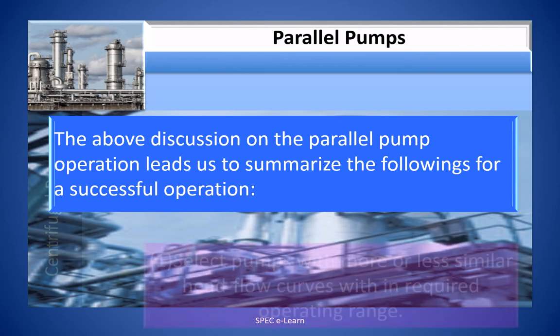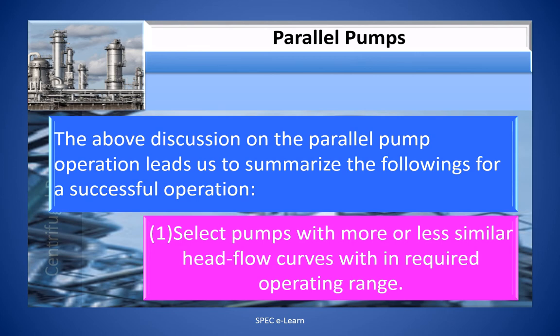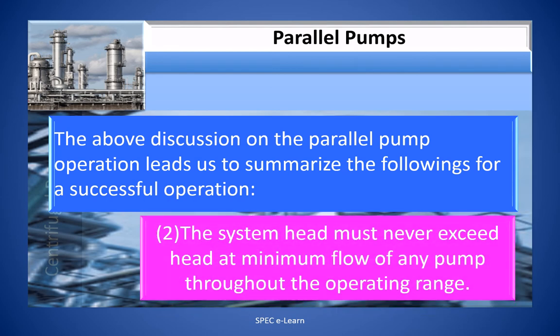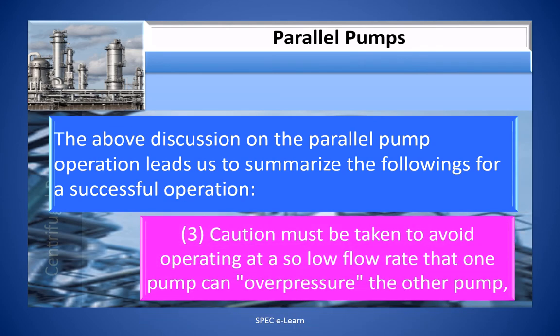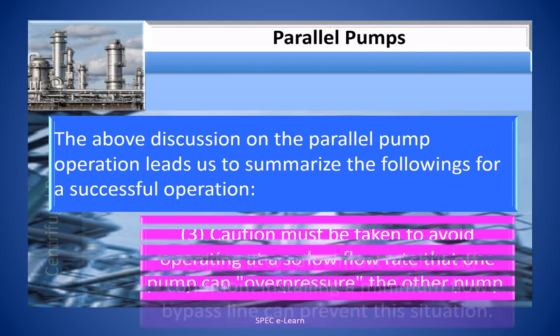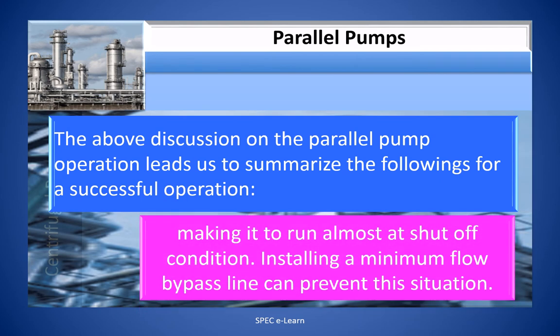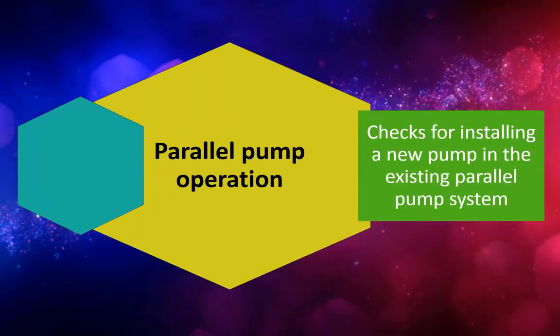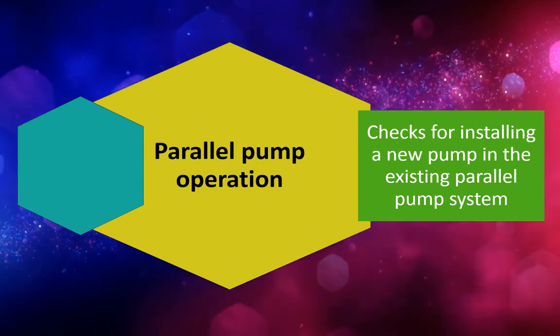The above discussion on parallel pump operation leads us to summarize the following for a successful operation. 1. Select pumps with more or less similar head flow curves within required operating range. 2. System head must never exceed head at minimum flow of any pump throughout the operating range. 3. Caution must be taken to avoid operating at so low flow rate that one pump can overpressure the other pump, making it run almost at shut-off condition. 4. Installing a minimum flow bypass line can prevent this situation. 5. Checks for installing a new pump in the existing parallel pump system.